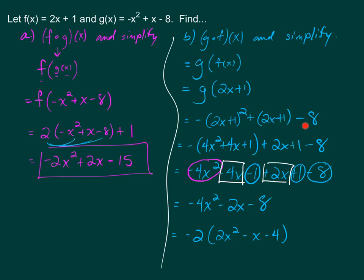We have 2x plus 1, and the minus 8 is still part of this. If you FOIL this out, you'll get 4x squared plus 4x plus 1, plus 2x plus 1 minus 8. Then you can distribute the negative to all three terms in this set of parentheses. So that will be negative 4x squared minus 4x minus 1 plus 2x plus 1 minus 8. Combine terms, and if you want to simplify further, you can common factor a negative 2 to the front.